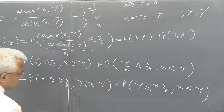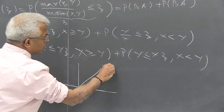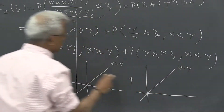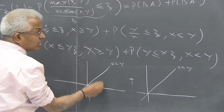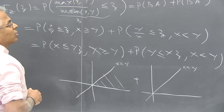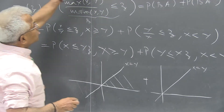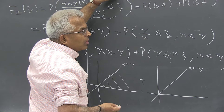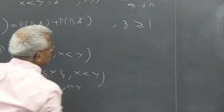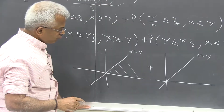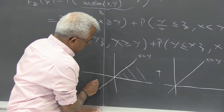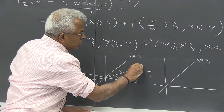We can look at the regions quickly. This is the line x equal to y. X greater than Y is this region. Note that z is going to be greater than 1, because maximum over minimum will always be greater than 1. So the random variable Z will always be greater than or equal to 1. The line x equal to Yz will be a line like this.